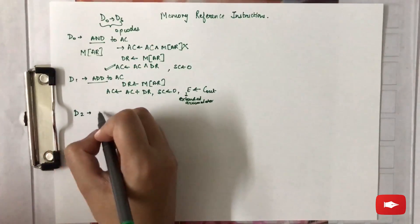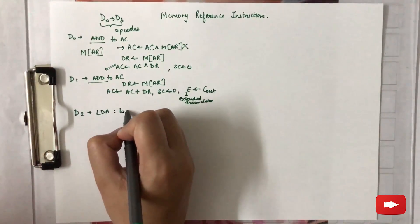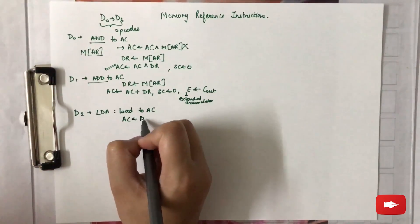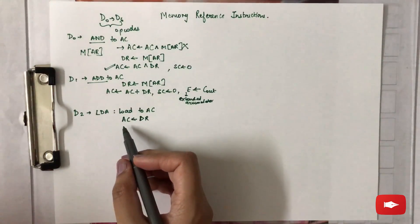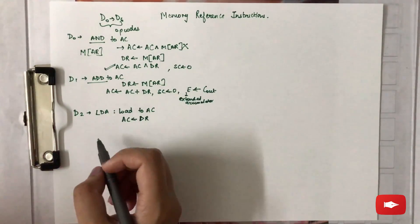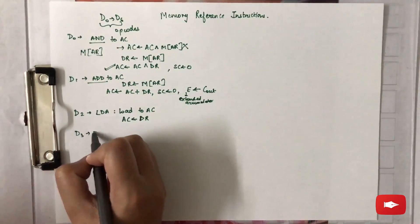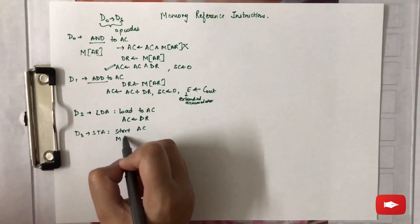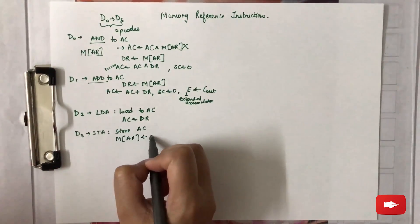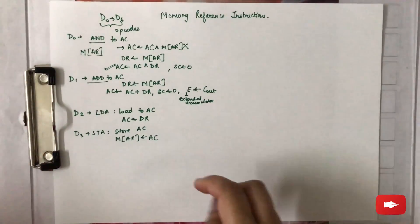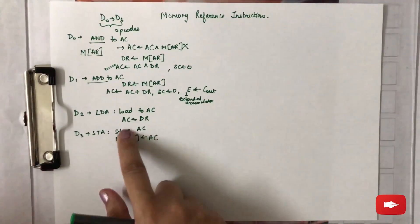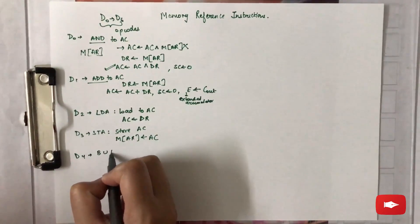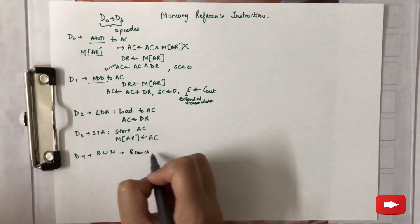d2 is LDA, which stands for Load to Accumulator. Here we load the value of the data register into the accumulator. d3 is STA, which stands for Store Accumulator — it is the reverse operation, where the contents of the accumulator are stored at that particular effective address. Next is d4, BUN, which stands for Branch Unconditionally.